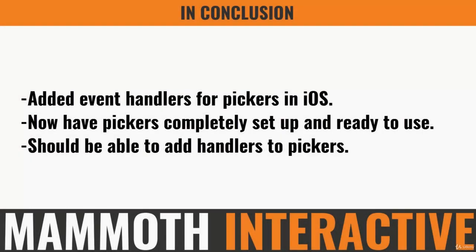In this part we added event handlers for our pickers in iOS. Up until this point we first created the class so we can create new pickers, then we created two new pickers — one for the variables, one for the calculations — and now we've added the handlers. We can basically handle what will happen when an item is selected from the pickers, so the pickers should now be completely set up and ready to use. In the next part we'll be looking at adding some more functionality.